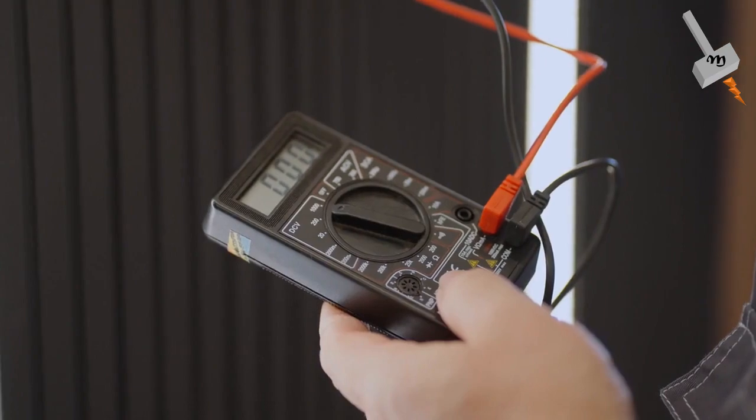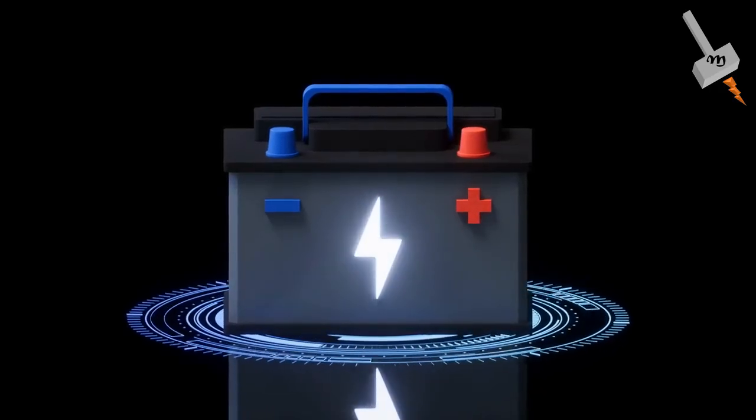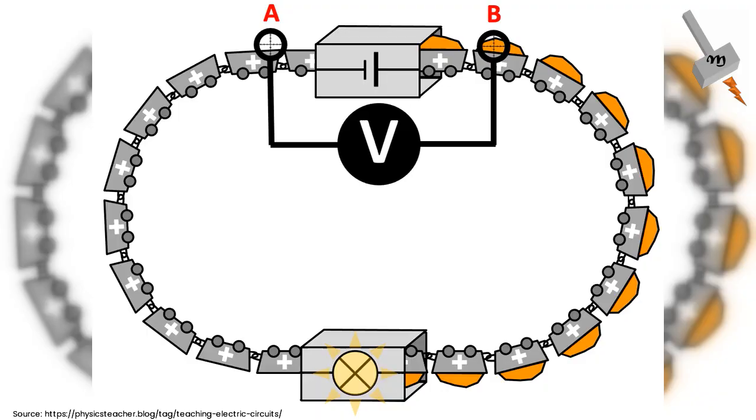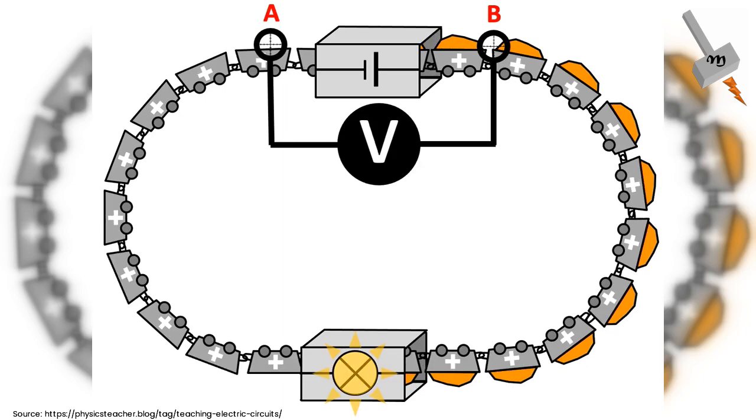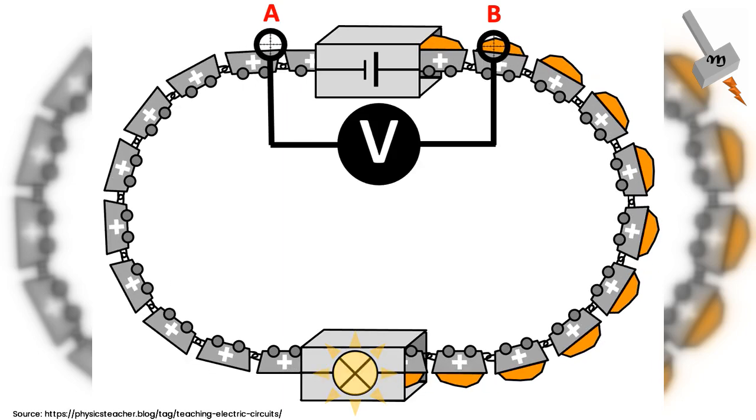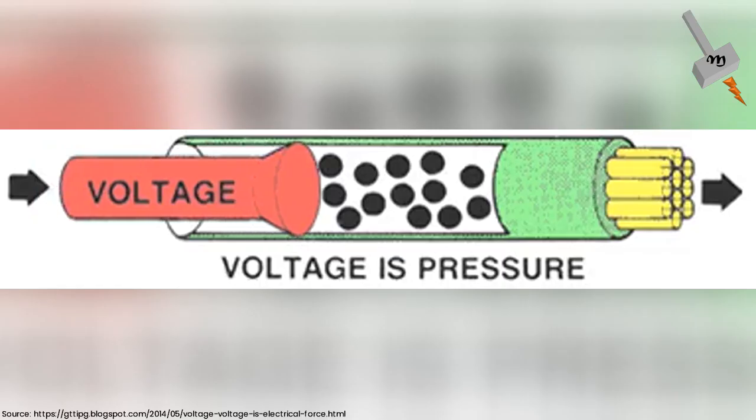Now let's see what is voltage. Voltage is also known as electric potential difference or electric potential. It represents the difference in electric potential energy per unit charge between two points in an electric circuit or field. In simpler terms, voltage is the driving force that pushes electrons to move through a conductor, creating an electric current.